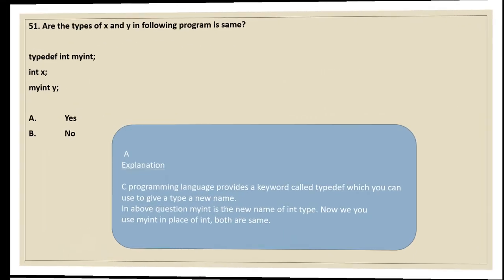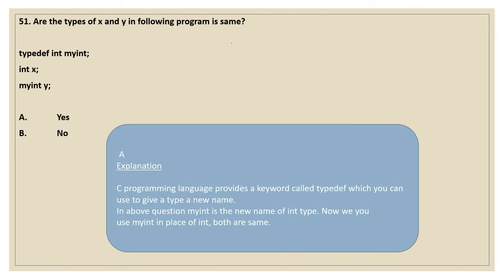Moving on to the next question. Are the types of x and y in the following program the same? typedef int myint. Int x, myint y. typedef means we have learnt this concept — type definition gives a new name for the existing data type. Here we have declared myint as a typedef, so it can be used as an integer data type for declaring the variable y. So the answer is going to be yes — both mean the same data type. By means of typedef we are giving a new name for the existing data type. So the answer is A — yes.